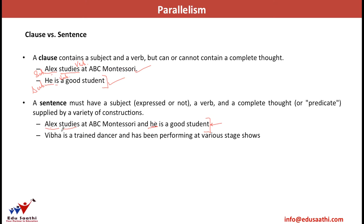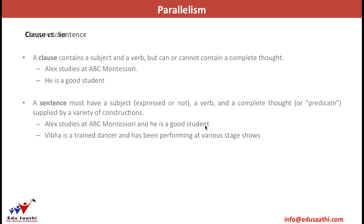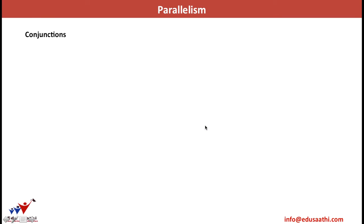Likewise, we have another sentence: 'Vibha is a trained dancer and has been performing at various stage shows.' If I read this sentence, I obviously understand that it is Vibha who has been performing at various stage shows.